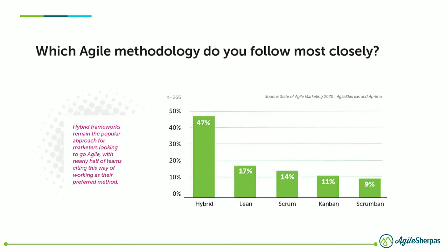The idea that you've got to use Scrum to be Agile is simply not true anywhere, but it's definitely not true in marketing. Far and away the most common approach marketers use is a hybrid approach — combining practices from multiple frameworks to create something custom for marketing. This does mean we have to do a little more upfront research to discover what bits and pieces from other frameworks will work best for us, but it will serve us well when we create this customized hybrid.